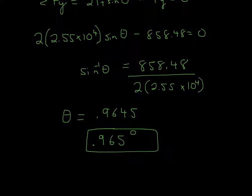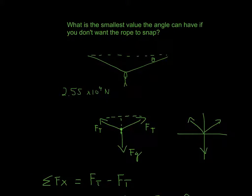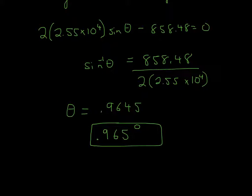So here we get 0.9645, but it will actually be 3 sig figs. Here it was 3 sig figs. So it will just be 3 sig figs.